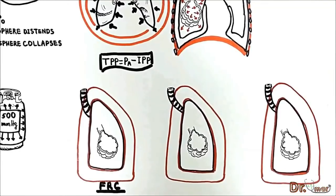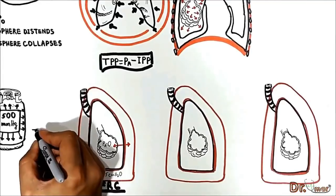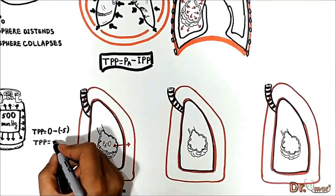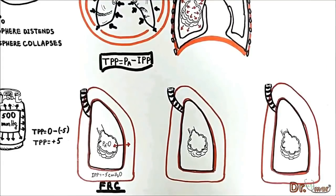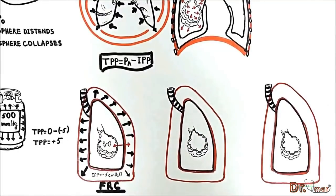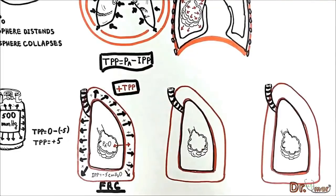At FRC, the alveolar pressure is zero and the intrapleural pressure is minus 5 cmH₂O. Transpulmonary pressure equals alveolar pressure (zero) minus intrapleural pressure (−5), which equals positive 5 — because subtracting a negative becomes addition. A transpulmonary pressure of positive 5 is a net force distending the lung, which keeps the alveoli open even after maximal expiration.